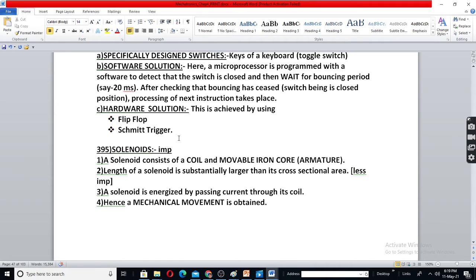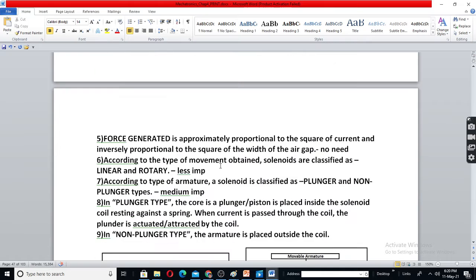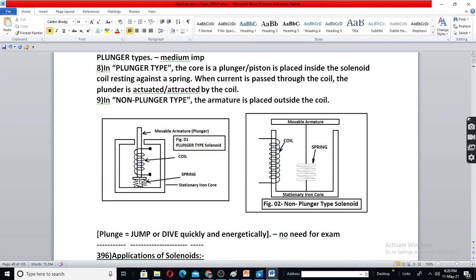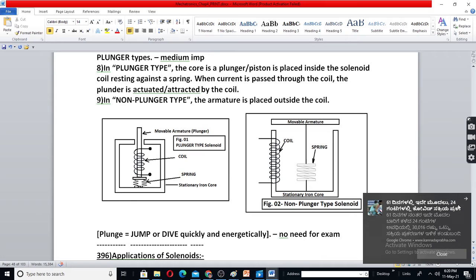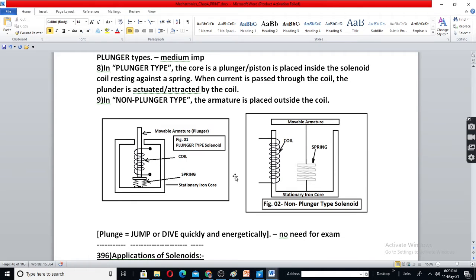Next we have solenoids. Solenoid is nothing but a coil and movable armature. There are two types. The armature or piston or plunger is called as plunger solenoid when it has this type of shape, piston type of shape, when that is inside the coil. We call this as plunger type solenoid.